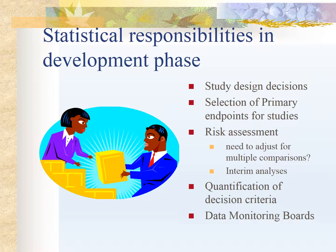The statistician's responsibilities in the development phase include design decisions, selection of primary endpoints for studies, risk assessment, adjustments for multiple comparisons and interim analysis, quantification of decision criteria — for example, if a drug has zero effect in one subject and one or two in another, that is quantification — and data monitoring boards which monitor the ongoing data.